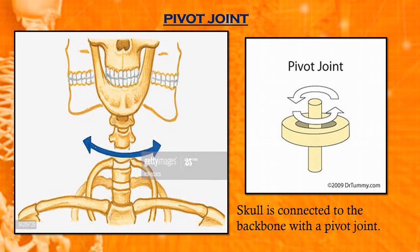Pivot joint allows rotating. Move your head from side to side and up and down. Such a joint that allows nodding and shaking of the head is called a pivot joint. The skull is connected to the backbone with a pivot joint.